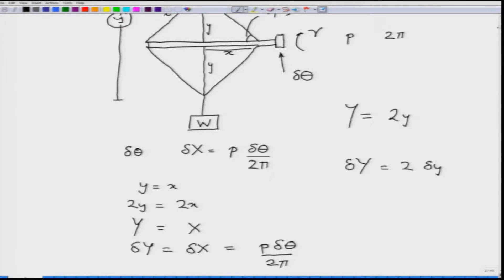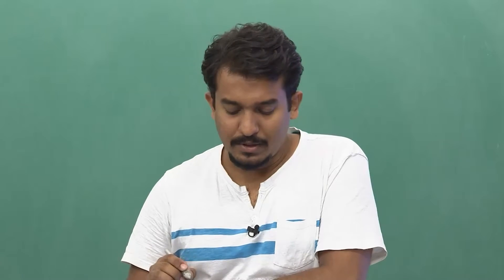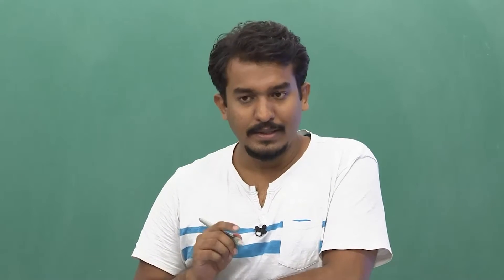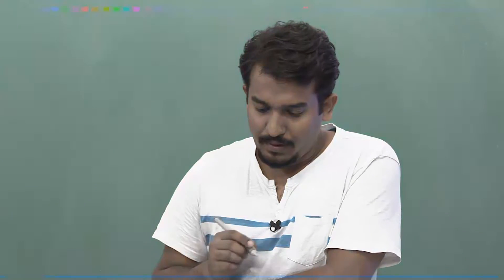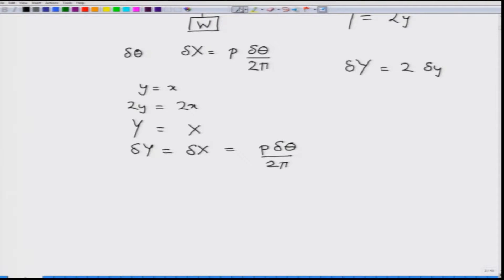Now we have a relation between the virtual displacement of weight W and the virtual displacement delta theta for the screw. We will now apply the principle of virtual work: the sum of virtual work at each external force equals zero. The first external force is the torque; the virtual displacement for the torque is delta theta, so I have gamma delta theta. The other external force is the weight W, which is multiplied by delta Y, and this has to equal zero.